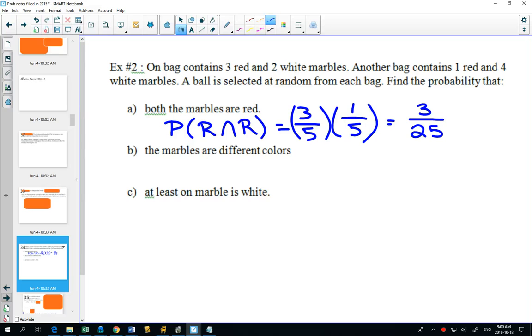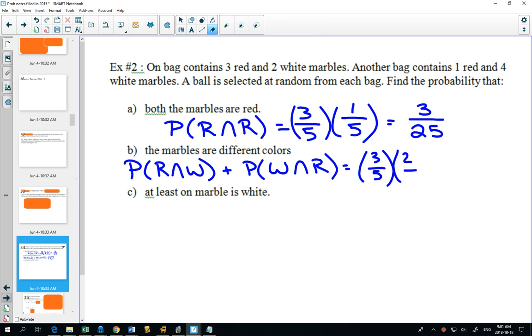The marbles are different colors. How could that happen? And be careful in how you explain this to me. Red one, then white, or white one, then red. So I would write that. This is the probability of getting red and then white plus the probability of getting white and then red. And both of those are independent. So red and then white. The second one has four white ones. Or getting white to begin with. And then red. Add those together.